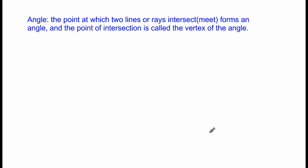Now an angle is really the point at which two lines or rays intersect - another word for intersect is meet. So where two lines or rays meet forms an angle, and the point of intersection or the point at which the lines or rays meet is called the vertex of the angle.